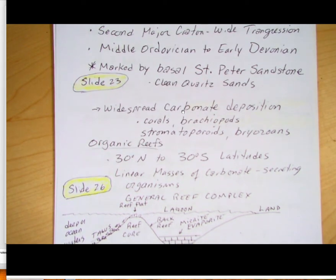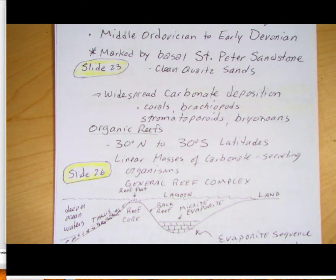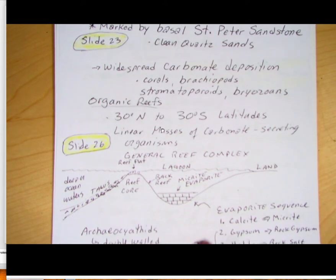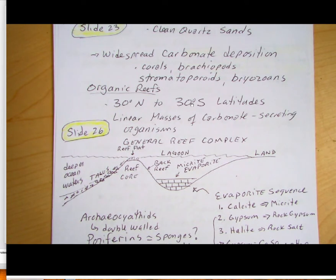What we find in the Tippecanoe sequence is widespread carbonate deposition, primarily in the form of organic reefs. Some of those reefs include corals, or these sponge-like organisms called stromatoporoids, which are porous and related to sponges but look somewhat like stromatolites. We also have bryozoans — moss animals — which are little invertebrates. Organic reefs today are found between 30°N and 30°S latitude, so when we find fossil reefs outside the tropics, it means tectonics has moved them from their place of origin.